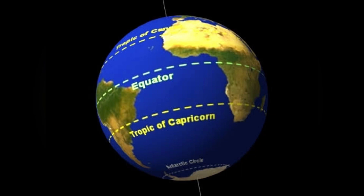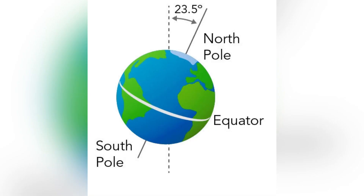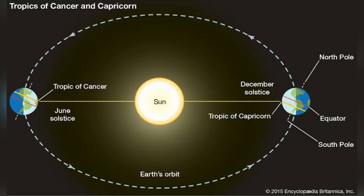Tropic of Capricorn — it lies approximately 23.5 degrees south of the equator. It is the farthest southern latitude at which the sun's rays can fall directly. Due to earth's axis and earth's orbit, the sun's rays fall on earth in such a way that June 21st is the beginning of summer in the northern hemisphere where the Tropic of Cancer is located, and December 21st is the beginning of summer in the southern hemisphere where the Tropic of Capricorn is located.